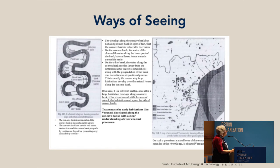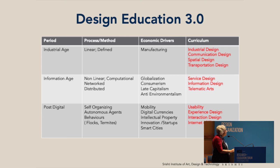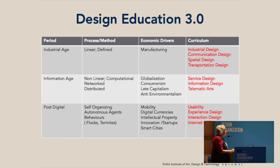In a post-digital period, technology processes are being organized around self-organizing autonomous agents. We have behaviors about following like flocks or termites. We're looking at intellectual property, startups, mobility, and smart cities as drivers in India. Our curriculum has expanded to include experience design, interaction design, IoT, and ideas about usability — and perhaps what's really at stake is usability for the other 90% who are not able to live and think in a pervasive world of microcomputers and microchips.